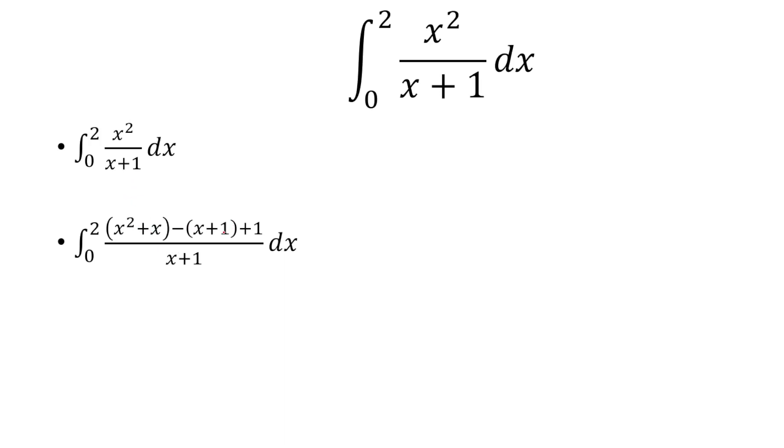And so this is what I change it into, and here's why. I take the highest degree in the denominator is x, the highest degree in the numerator is x squared. x squared over x simplifies to just x.